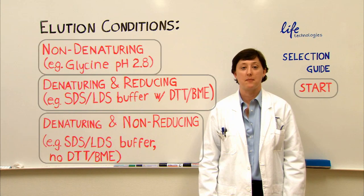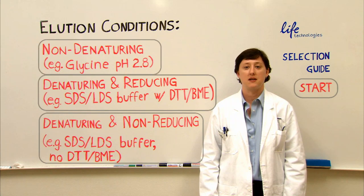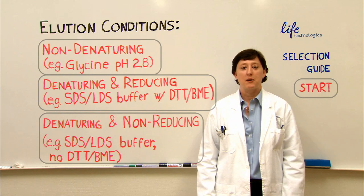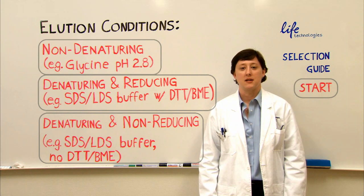Okay, so you have a purified antibody and you don't want the heavy and light chain to be coeluted along with your target protein. Got it. How we proceed from here will depend on your elution conditions.